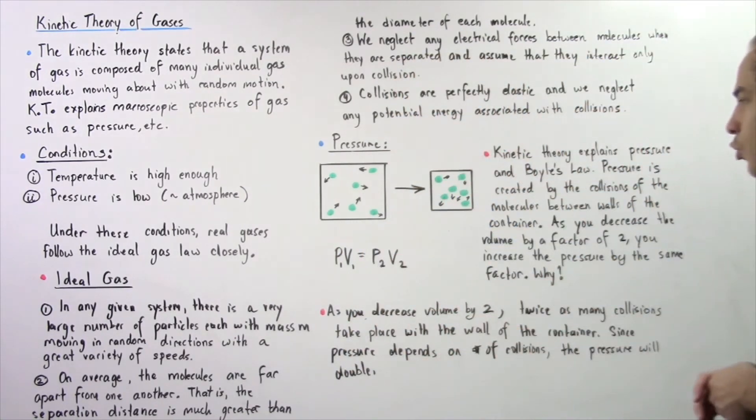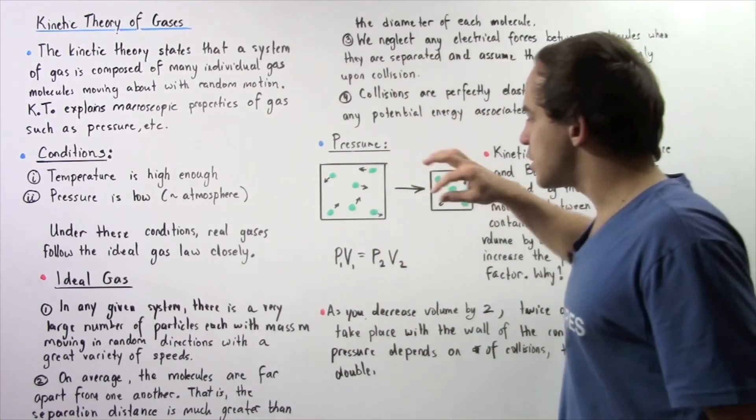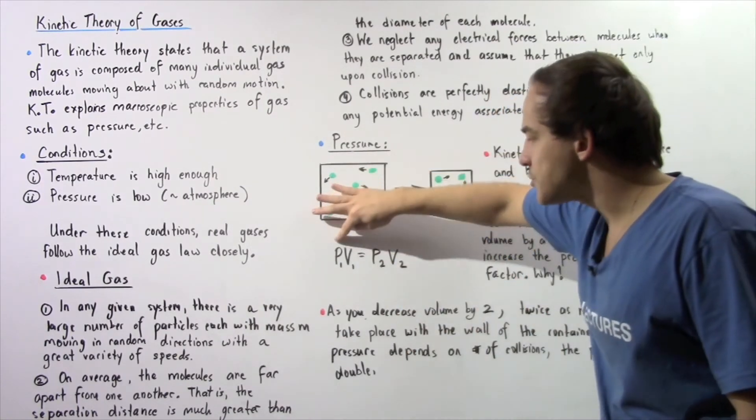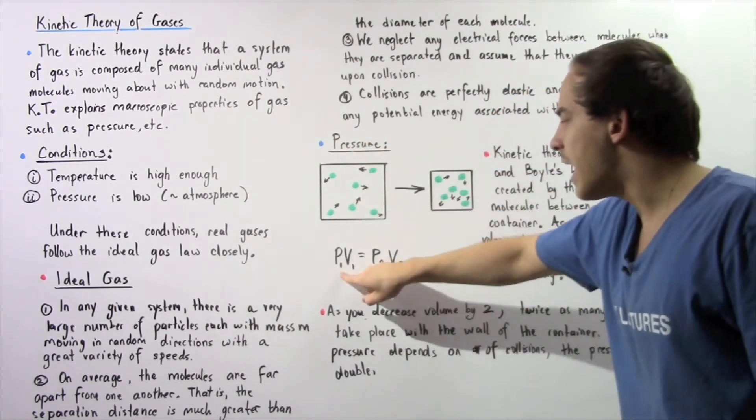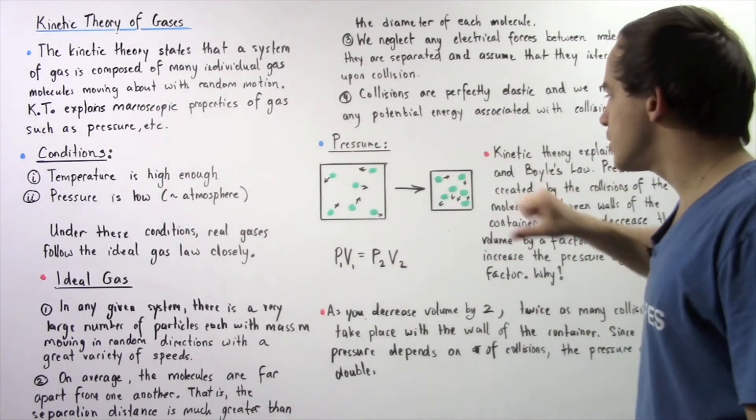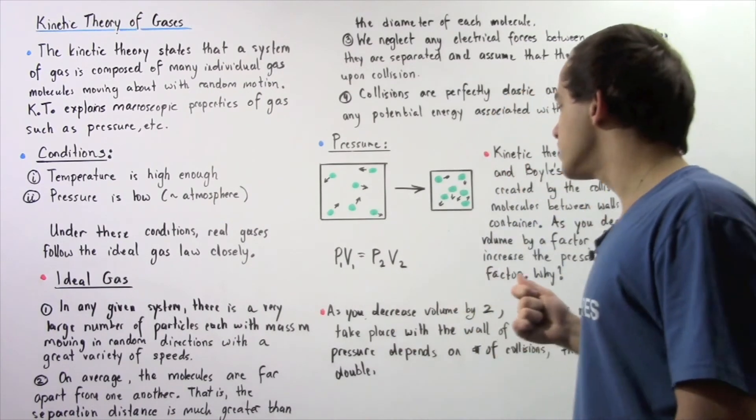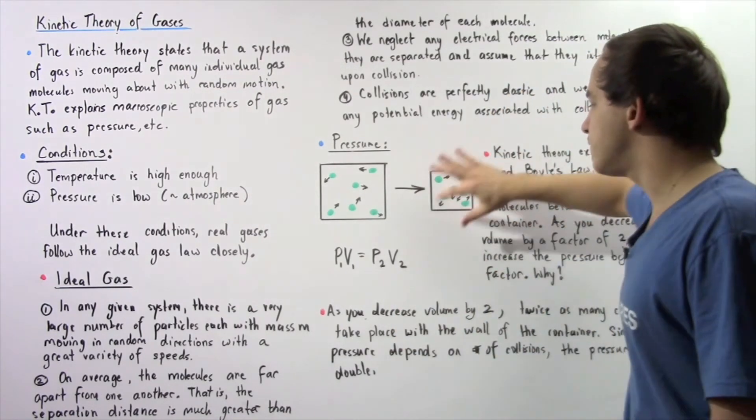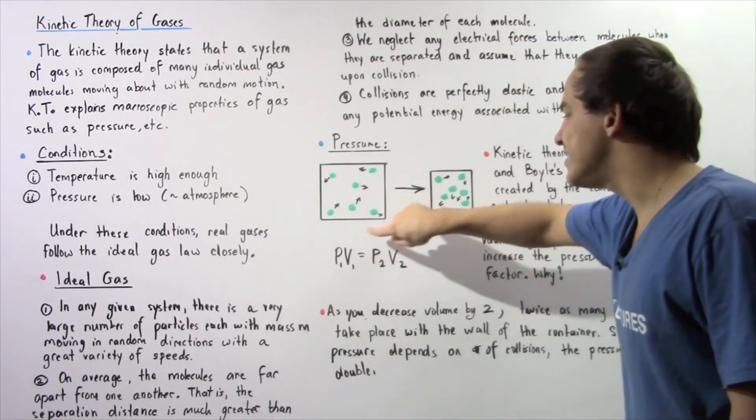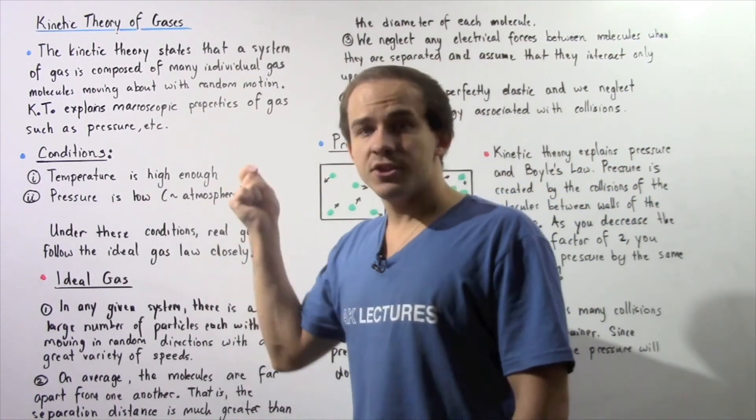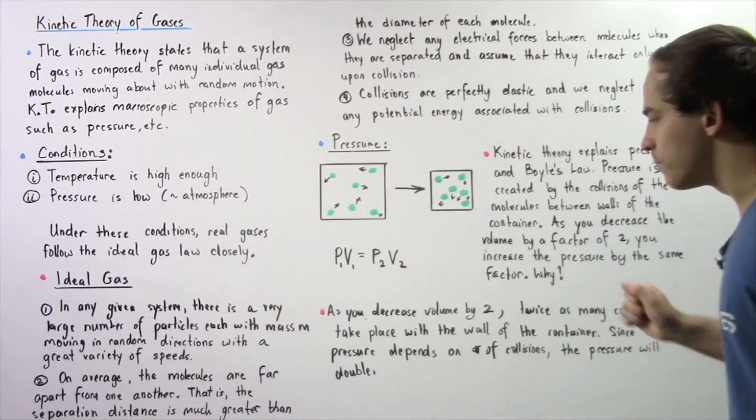But why is that true? So Boyle's Law states that if our temperature is constant, then the pressure in this container times the volume in this container is equal to the pressure in this container times the volume of this container. So Boyle's Law states that if we decrease volume by two, we have to increase pressure by that same factor. So the kinetic theory helps explain why this is true.